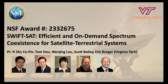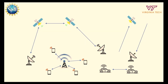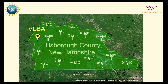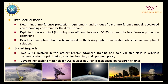Our project is SWIFT-SAT: Efficient and On-Demand Spectrum Coexistence for Satellite Terrestrial Systems. We aim to design a spectrum coexistence strategy for satellite and terrestrial systems. One unique challenge is that passive users and satellite systems are exceptionally susceptible to interference. As a case study, we consider the 4,990–5,000 MHz band for radio astronomy and the adjacent 4,940–4,990 MHz band proposed for shared use between public safety and commercial 5G users. We propose a power control strategy utilizing a lexicographic order to fairly maximize 5G base station powers while managing out-of-band interference to protect radio astronomy sites. For the Very Large Baseline Array site in Hillsborough County, New Hampshire, our solution achieves an 82% activation rate for 5G base stations while meeting the interference threshold for the VLBA. In future work, we will design more spectrum coexistence schemes tailored to terrestrial and diverse satellite systems.